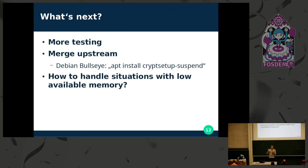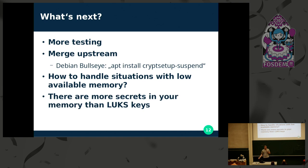There's also the very tricky situation if you are low on memory. As I said, argon2i needs about usually one gigabyte of RAM when unlocking the device, which you might not have. So if you're very knowledgeable about kernel memory management, please talk to me. Obviously, there are more secrets in your memory than just the LUKS keys, so we were planning to include some scripts to clear away some of those secrets as well.